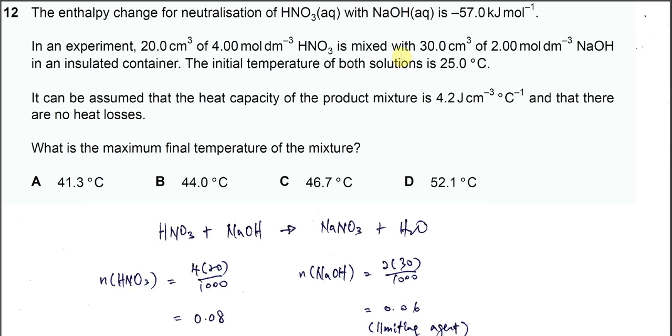Question 12. This question is a neutralization between nitric acid and sodium hydroxide, and the delta H is given as negative 57 kilojoules per mole. So this is the experiment - volume and concentration of the acid and the sodium hydroxide are given.